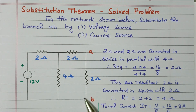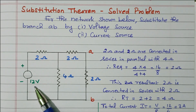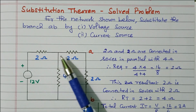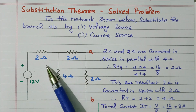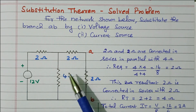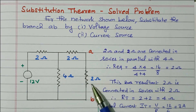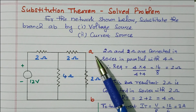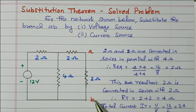Consider this network. A 12V voltage source is available, and 4 resistors are available: 2 ohm, 2 ohm, 4 ohm, and 2 ohm. Here we are going to substitute the terminal AB.